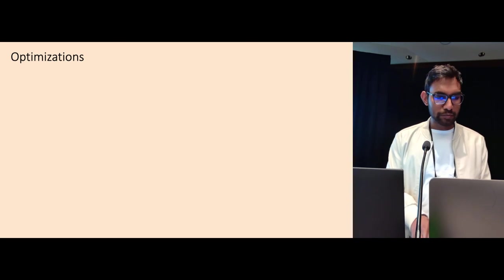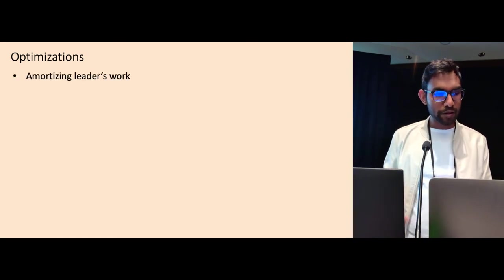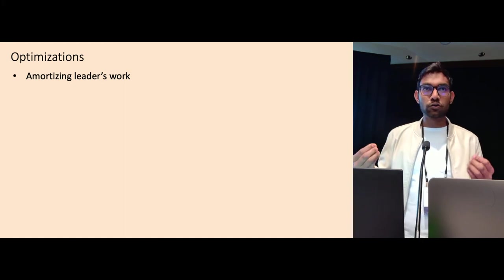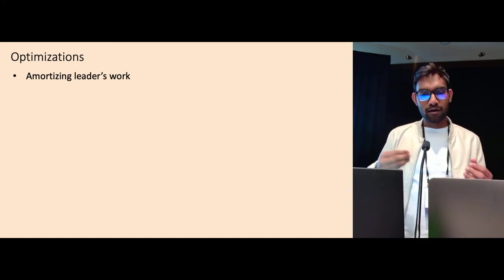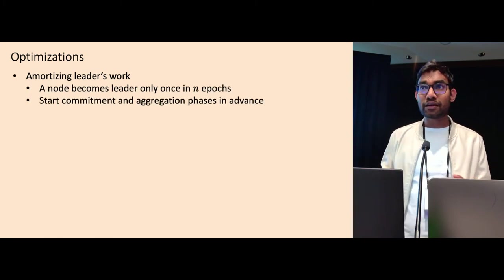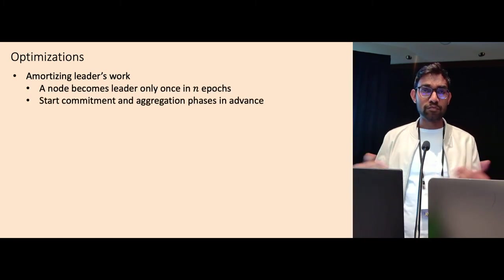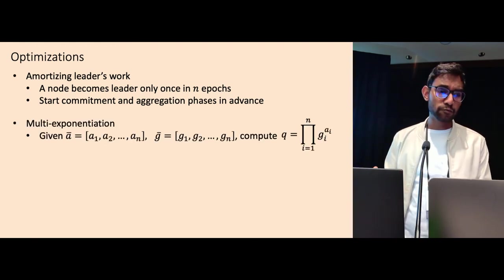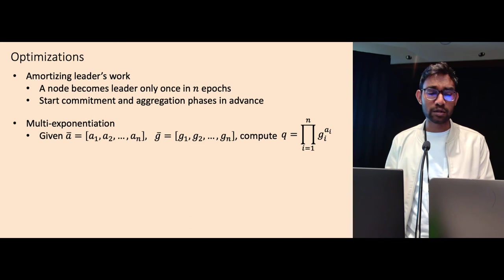We have some optimizations in our paper where we amortize the leader's work. In our protocol, each node becomes leader only once in any box so that we just make sure that the node does the commitment and aggregation phase a priority so that we can pipeline the entire system. We also use multi-exponentiation whenever possible for computation optimization.